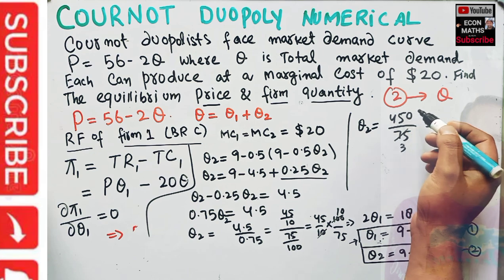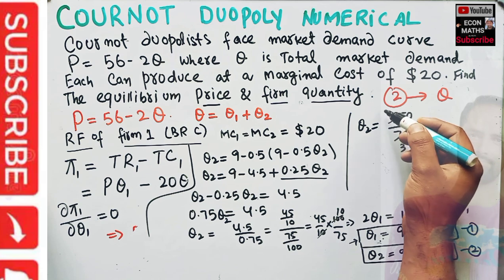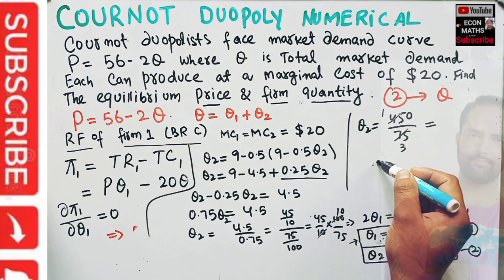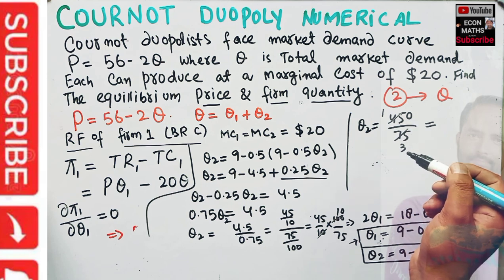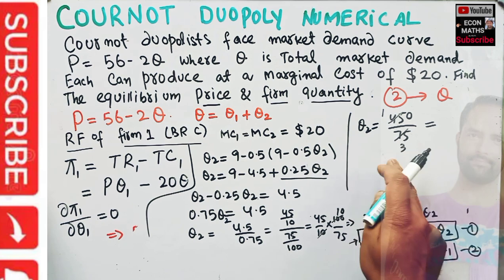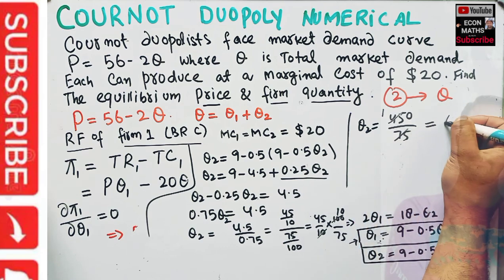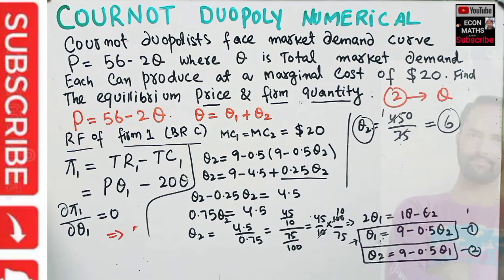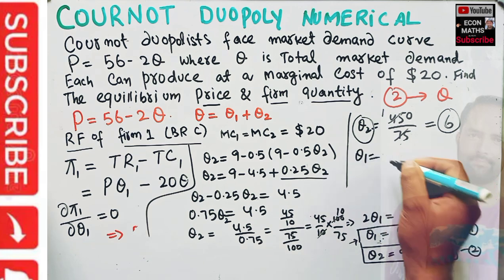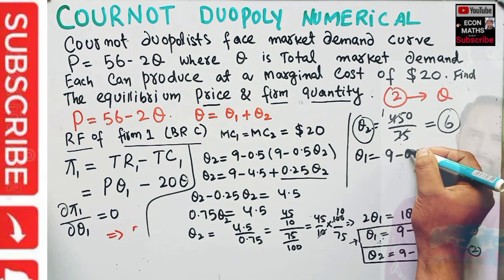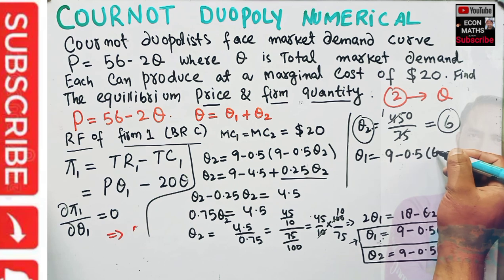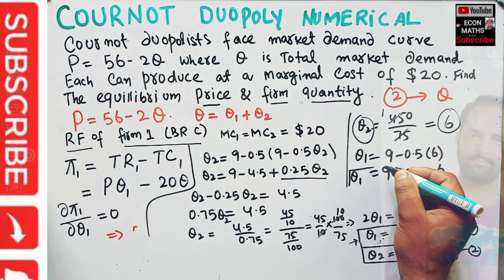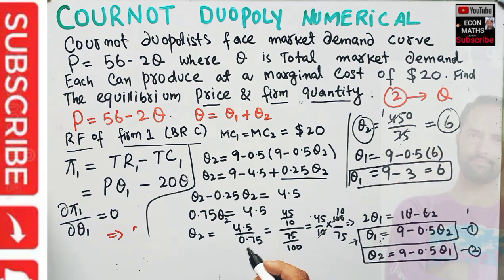So Q2 = 450/75 = 6. That means the output produced by firm two is equal to 6. Now plugging Q2 = 6 back into firm one's reaction function: Q1 = 9 - 0.5·(6) = 9 - 3 = 6. So the quantity produced by each firm is equal to 6.